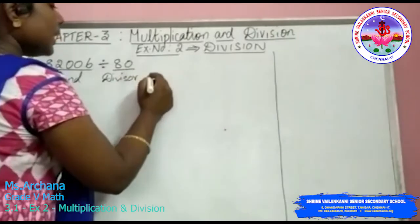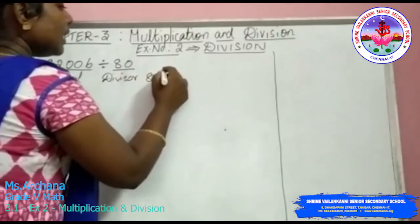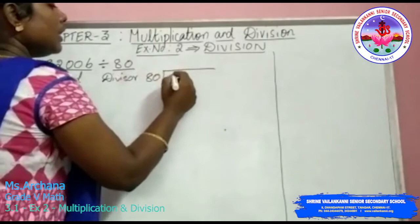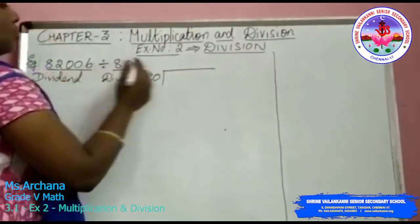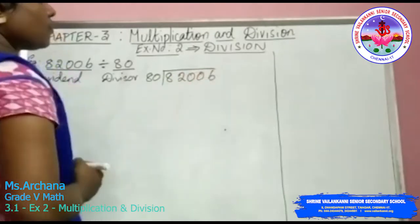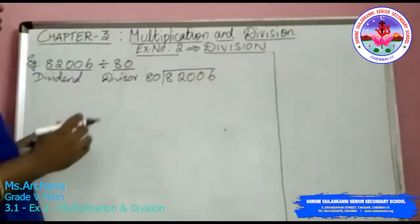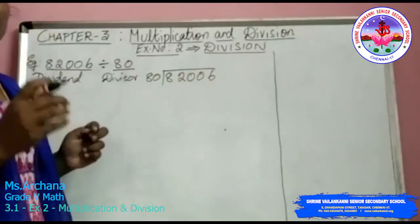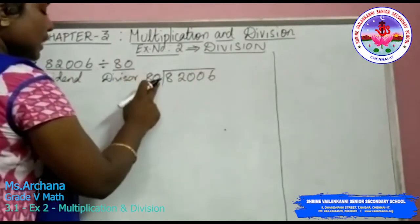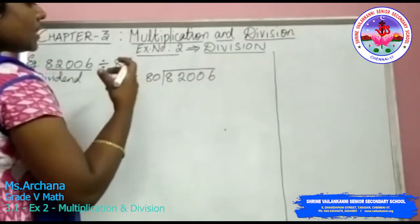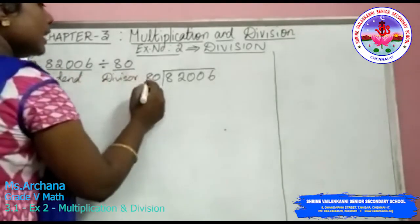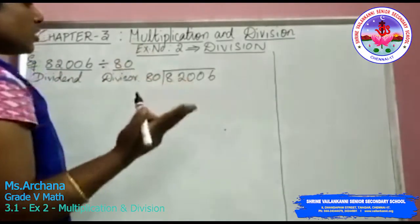Always this divisor will be written outside the division symbol. Inside, the dividend has to be written — 82006. So whenever you do division, first of all you should consider the divisor. You should check what is the number of digits given to you in the divisor. So in the divisor, you have 2 digits.